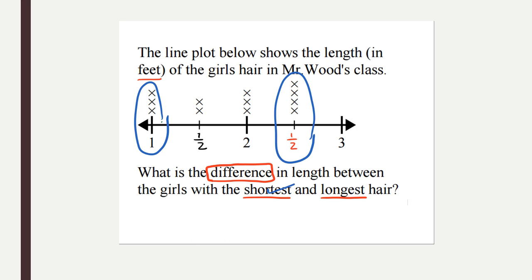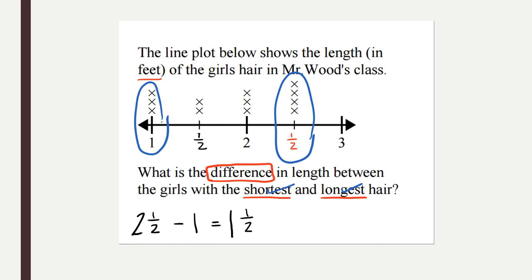There are four girls in Mr. Wood's class with hair that's two and a half feet long. I need to find the difference between those two values, so I'm subtracting. I need to use the biggest number first: two and one half, minus one. Start subtracting with the fractions — one half minus zero, since there are no fractions with the whole number one. One half minus zero is still one half. Subtracting the whole numbers: two minus one is one. The difference in length between the girls with the shortest and longest hair is one and a half feet.